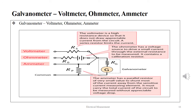The figure shows how a galvanometer can operate as a voltmeter, an ohmmeter, and an ammeter. The voltmeter is a high resistance device so that it does not draw appreciable current from the circuit; a series resistor limits the current. The ohmmeter has a voltage source to drive a small current through the external resistance to be measured and contains a calibrated resistor. The ammeter has a parallel resistor of very small value to shunt most of the current away from the sensitive measuring element, and it must carry the total current without appreciable voltage drop.